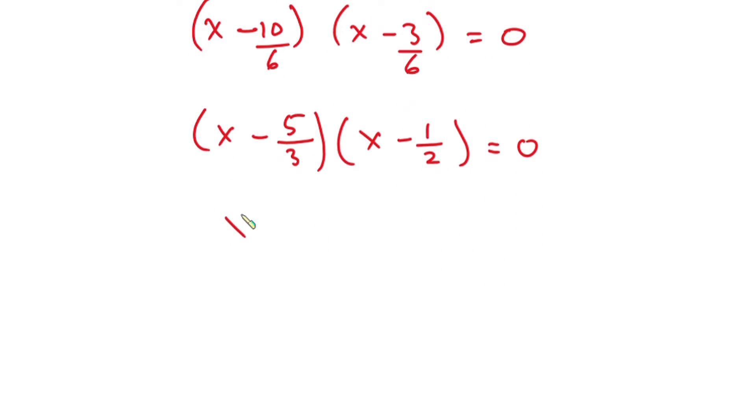Now from here we can say that x minus 5 over 3 is equal to 0 or x minus 1 half is equal to 0. From this equation we have x is equal to 5 over 3 or from here we have x is equal to 1 half.